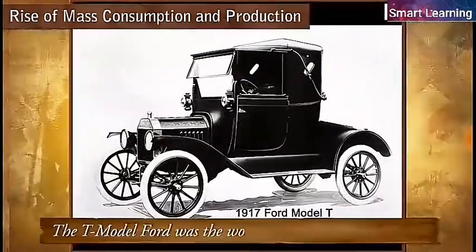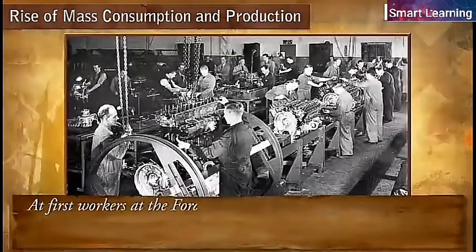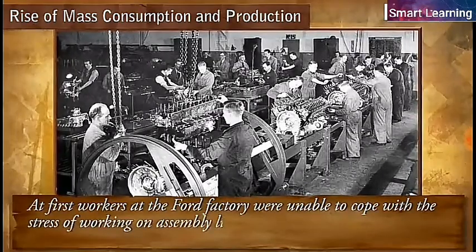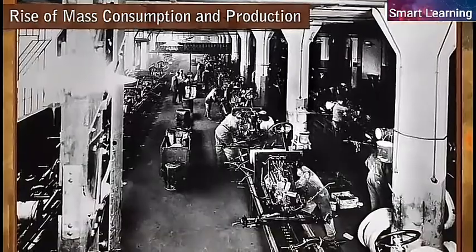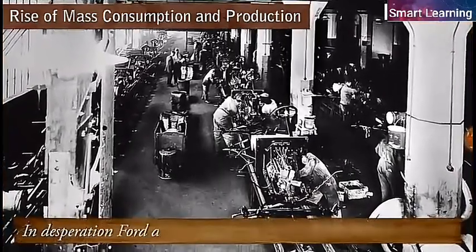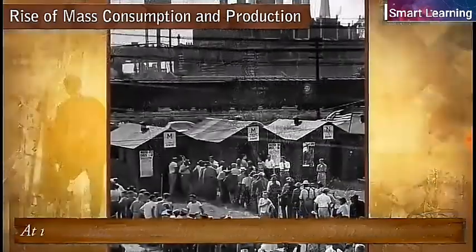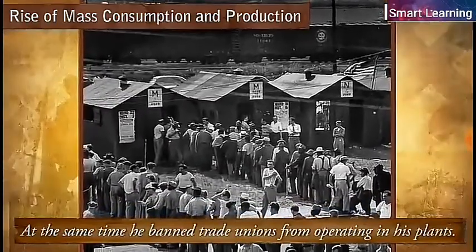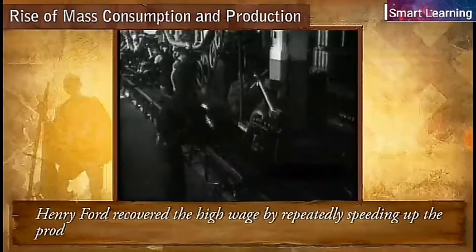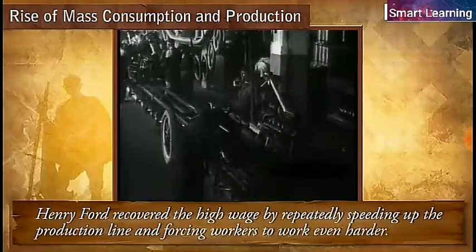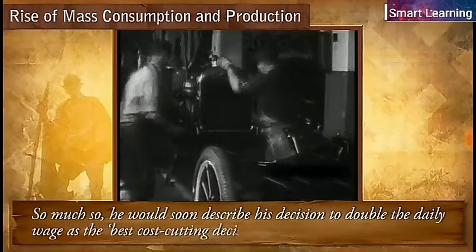The T-Model Ford was the world's first mass-produced car. At first, workers at the Ford factory were unable to cope with the stress of working on assembly lines, in which they could not control the pace of work, so they quit in large numbers. In desperation, Ford doubled the daily wage to five dollars in January 1914. At the same time, he banned trade unions from operating in his plants. Henry Ford recovered the high wage by repeatedly speeding up the production line and forcing workers to work even harder, so much so he would soon describe his decision to double the daily wage as the best cost-cutting decision he ever made.